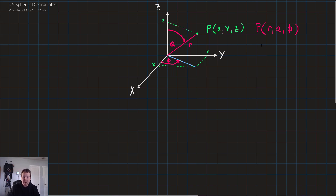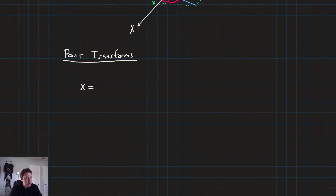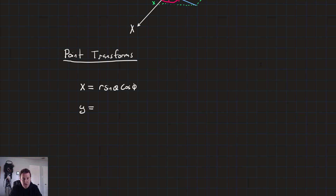Now let's look at the point transforms — how we convert X's, Y's, and Z's to R's, theta's, and phi's. X is equal to R sine theta cosine phi. Y is equal to R sine theta sine phi. And Z is equal to R cosine theta.